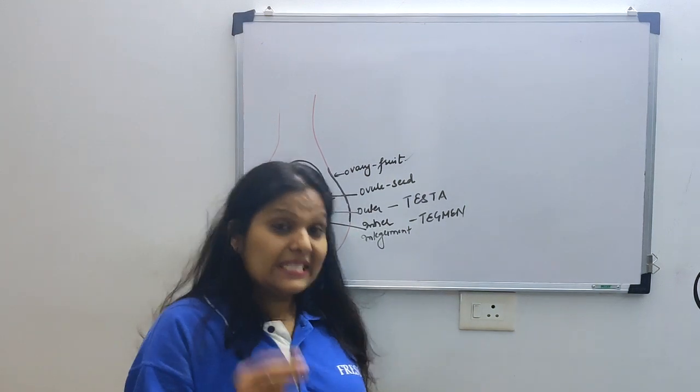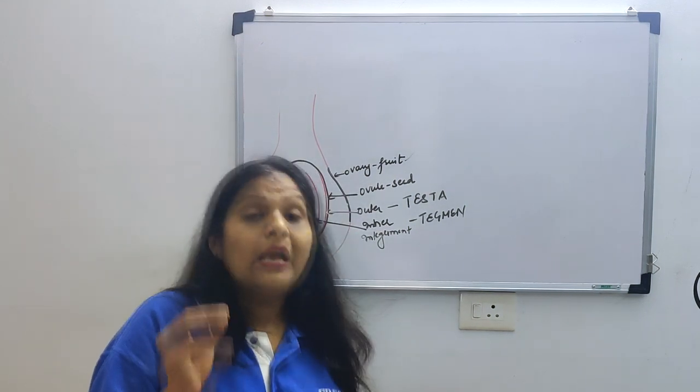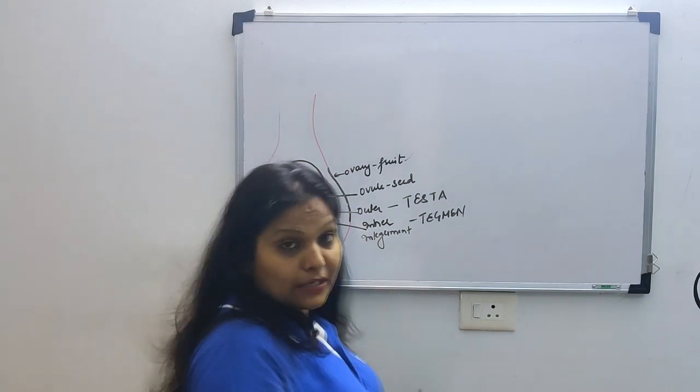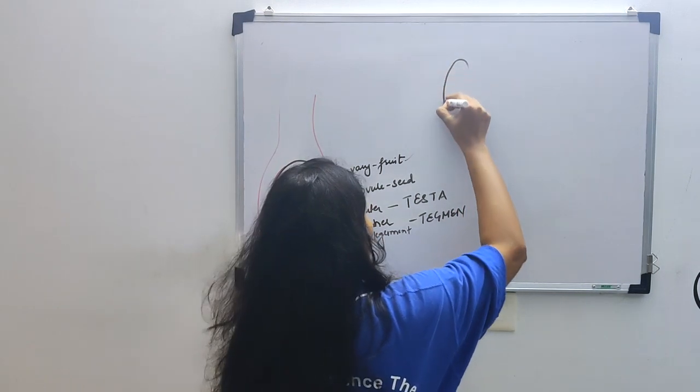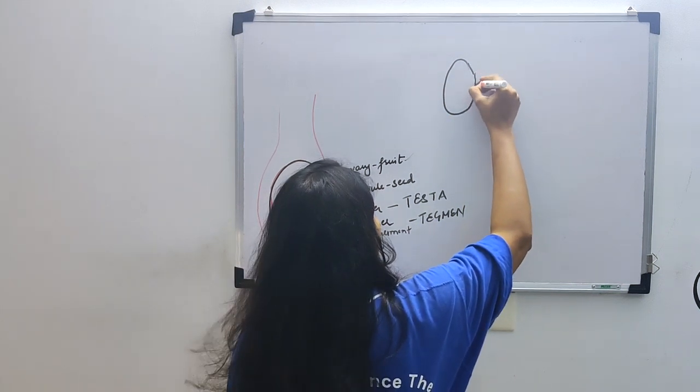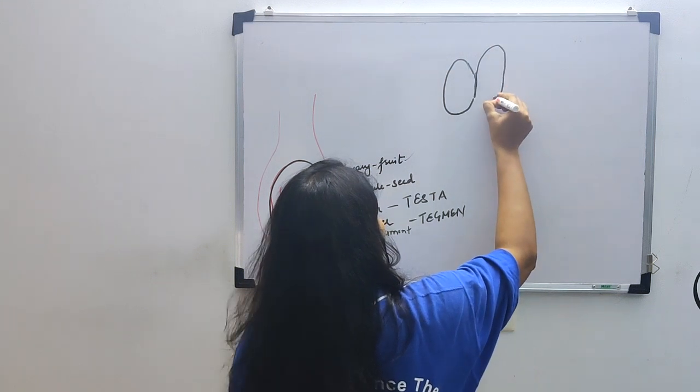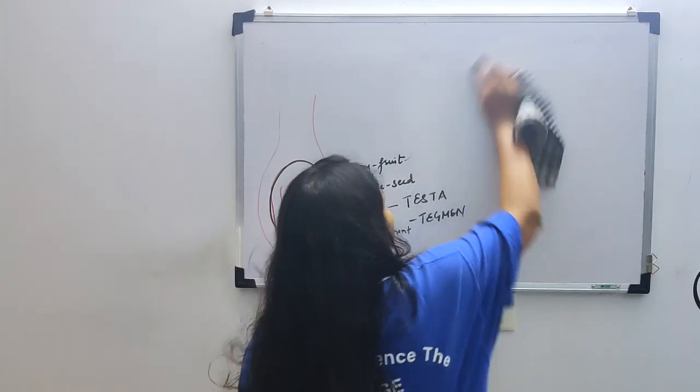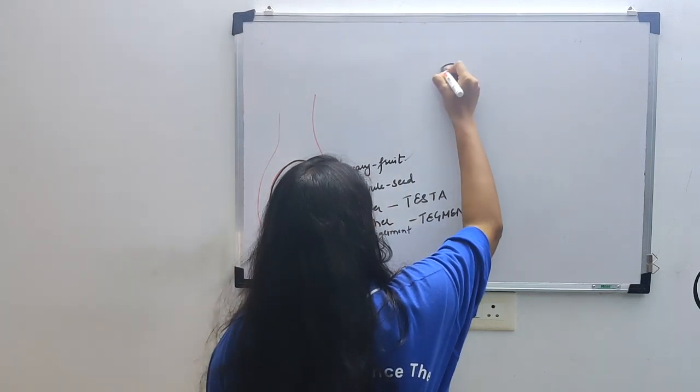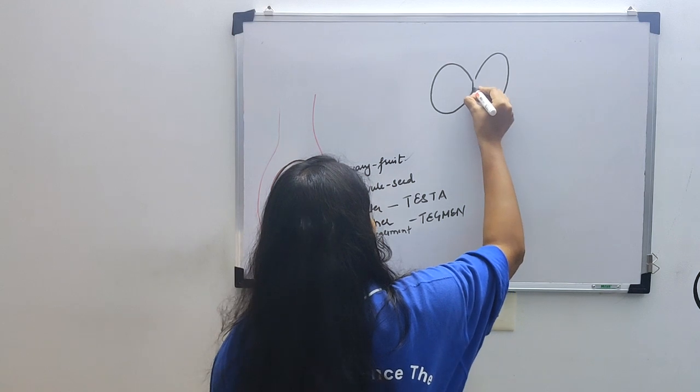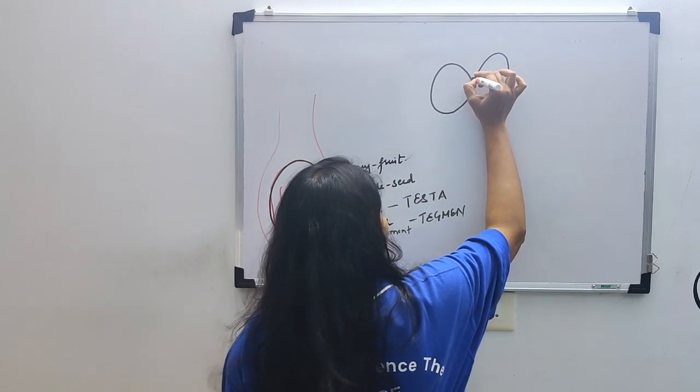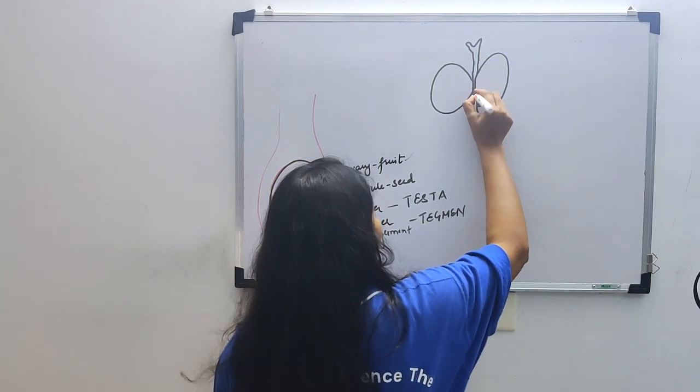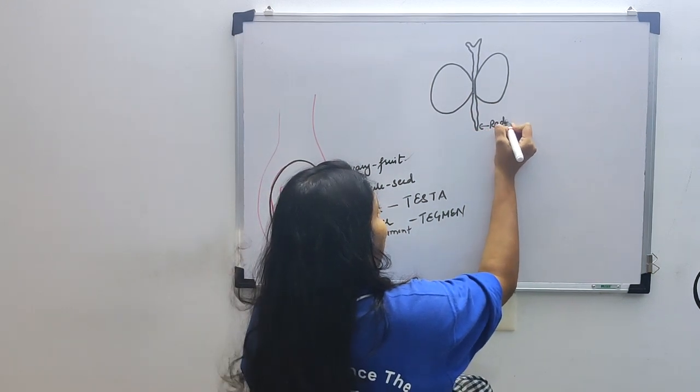Gradually, this embryo will further develop and will start utilizing the endosperm. Now, we have seen dicot and monocot seed structure. Dicot seed - there are two cotyledons. This is a small embryonal axis, and there are two cotyledons which are attached to a single point. These are the cotyledons, this is plumule, and this is radicle.